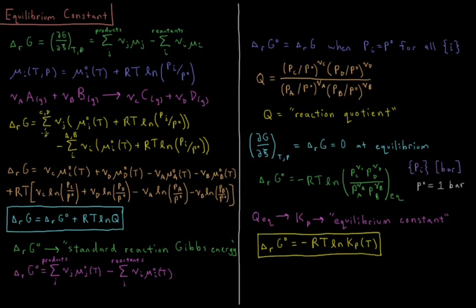The Gibbs energy of reaction is a sum over all products of their stoichiometric coefficients times their chemical potential — which is their standard chemical potential plus RT times the log of the pressure of that product divided by the standard pressure — minus the same thing for the reactants: sum over A and B of ν_i times the standard chemical potential plus RT times the log of the pressure of that reactant divided by the standard pressure.